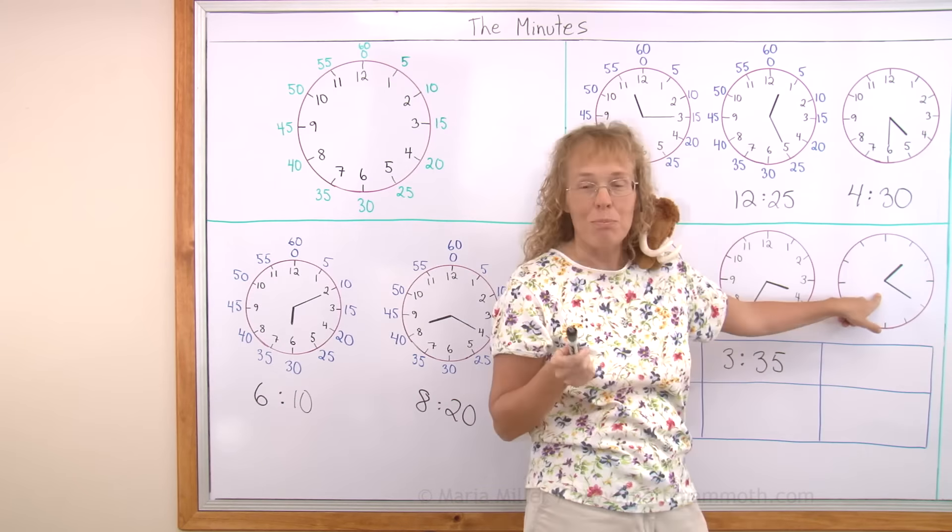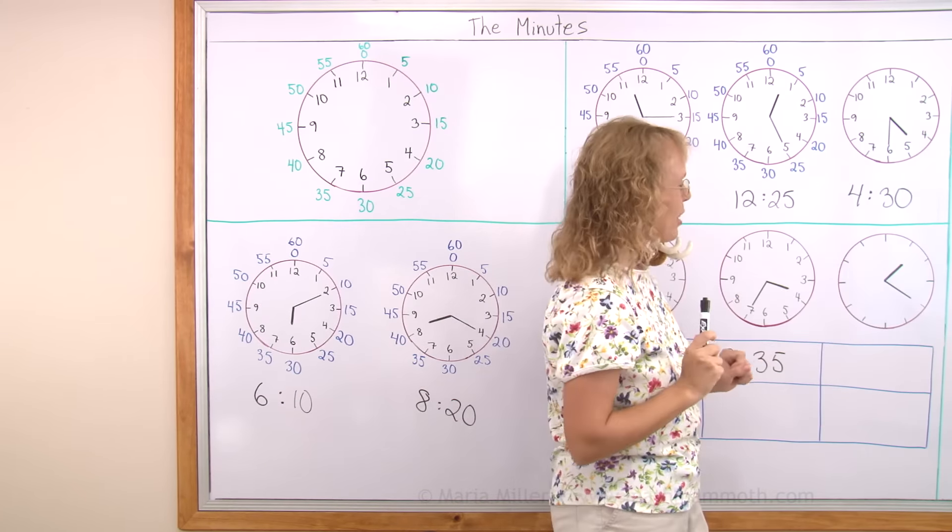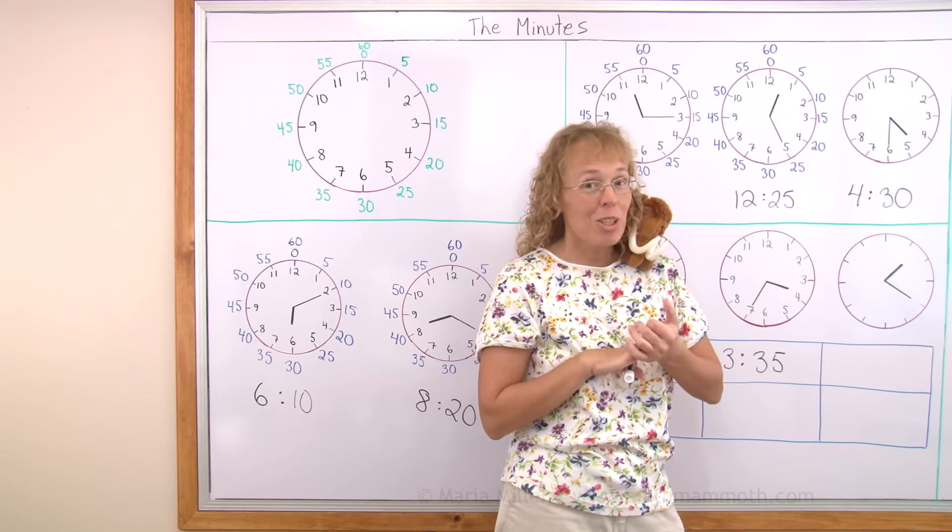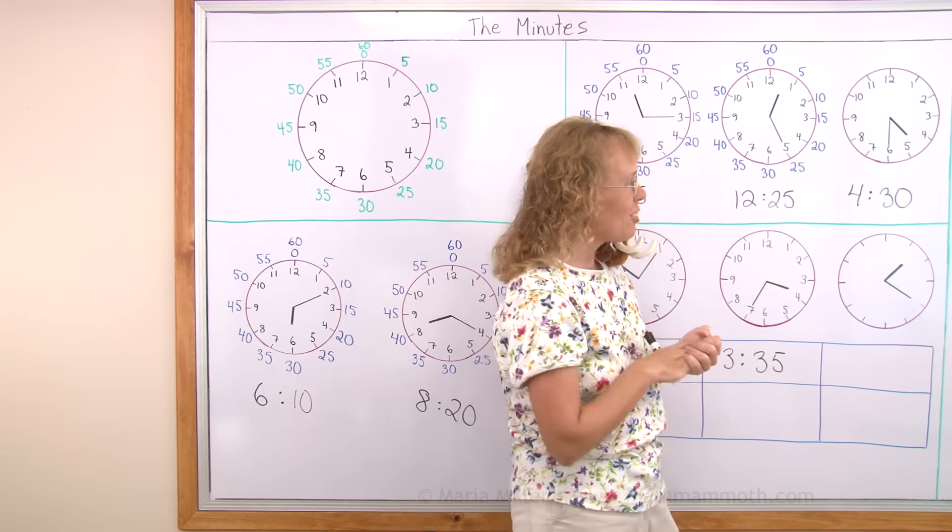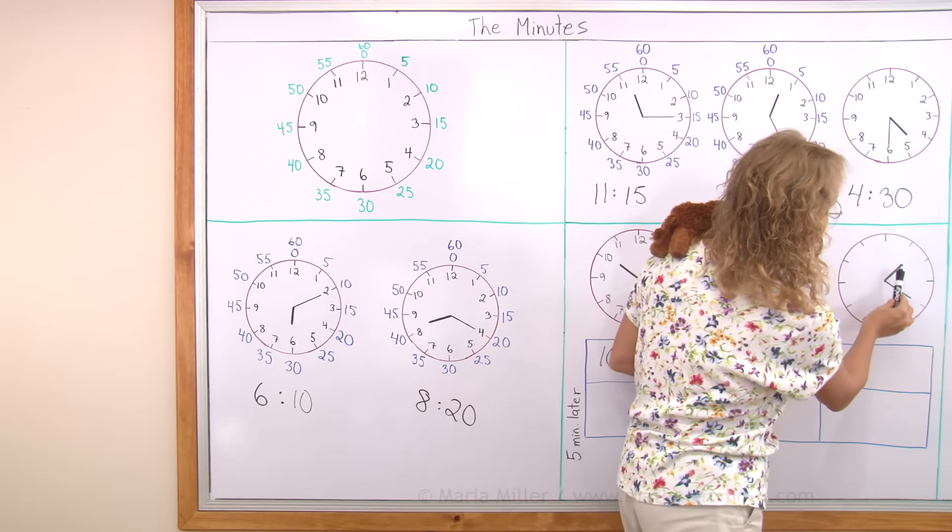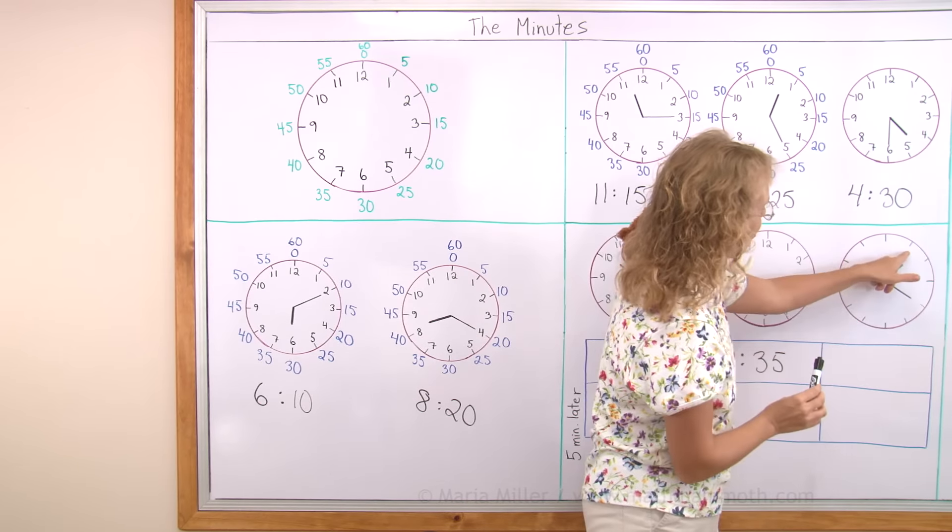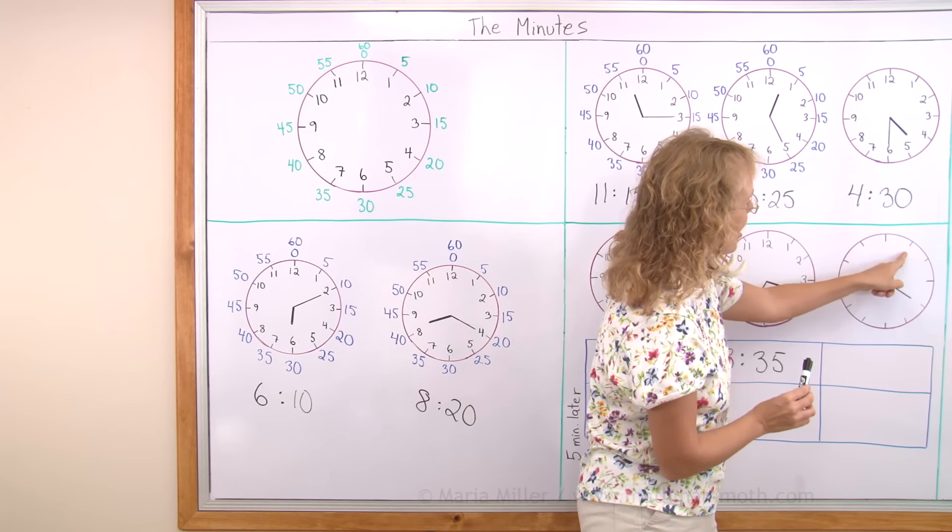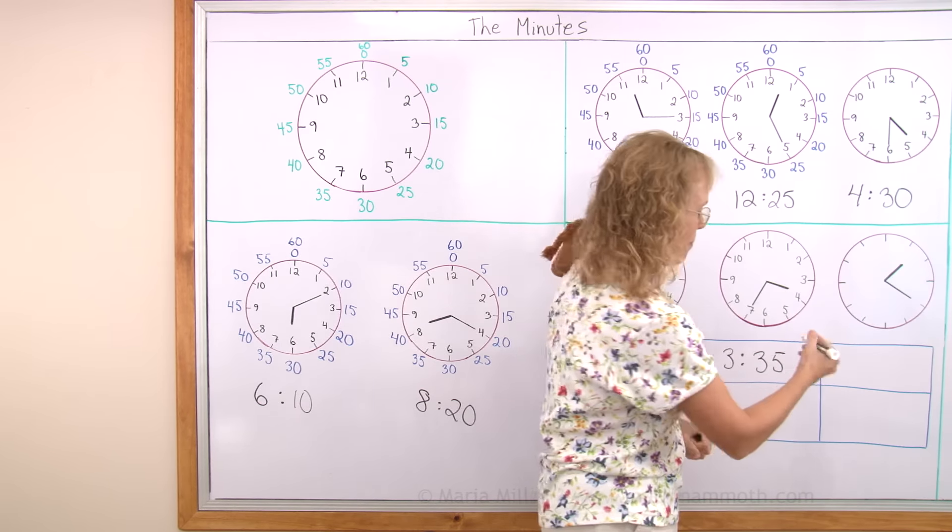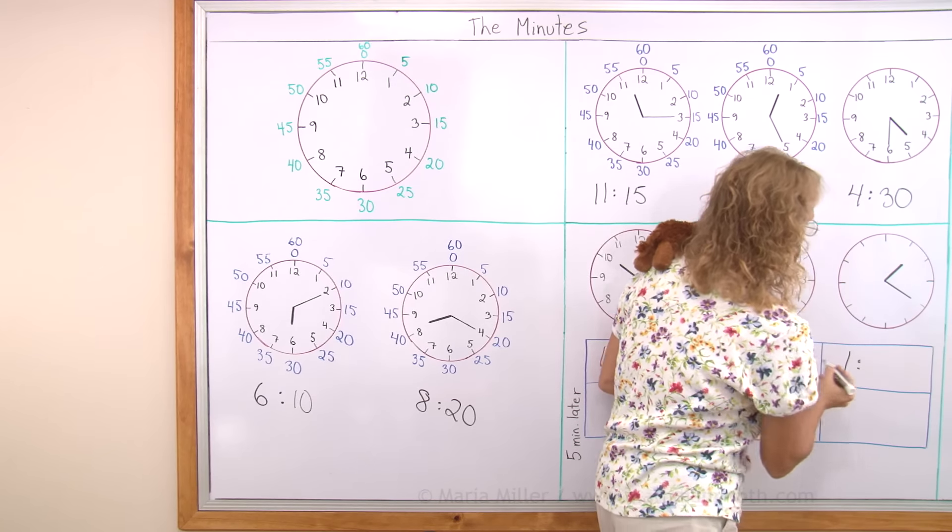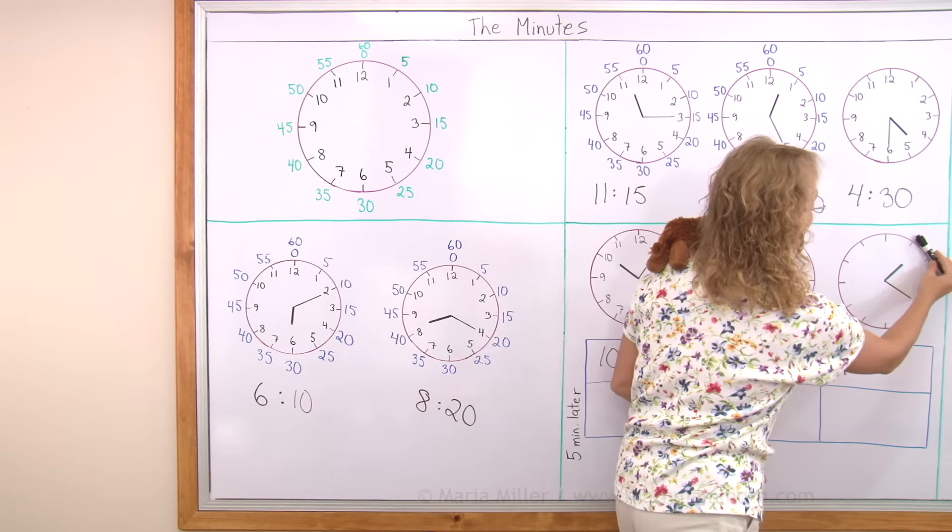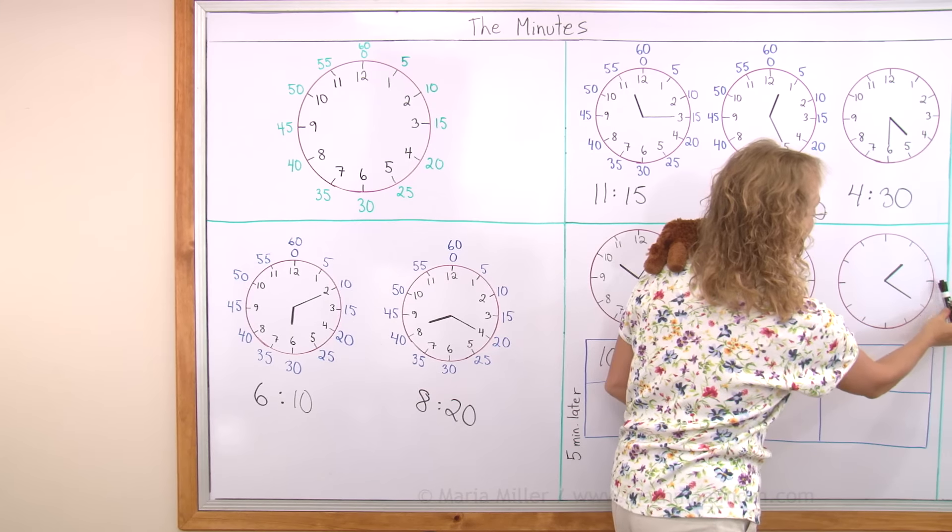And then this one is more challenging yet. Because it doesn't have the numbers even for the hour hand. And that's pretty normal too. Because there's lots of clocks that don't have any numbers. You just need to know them. The hour hand is the shorter one. Here. And of course here we would have 1 and 2 and 3. So it's pointing between 1 and 2. It's 1 hour something. And the minute hand. Now we count by 5's. Starting here. 5, 10, 15, 20.